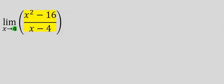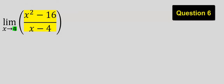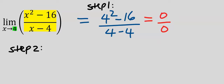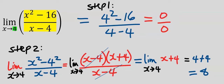You can pause the video and try this out. Step 1: direct substitution gives 0 over 0. Step 2: apply L'Hôpital's rule. Using difference of two squares and solving carefully, the answer is 8. You can also use differentiation and still get the same answer.